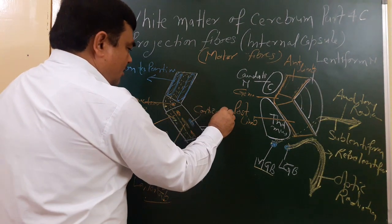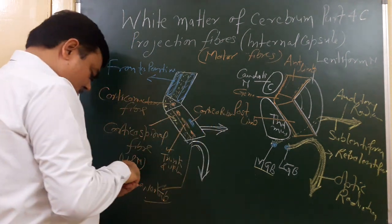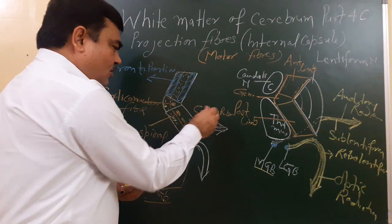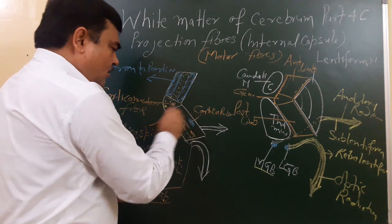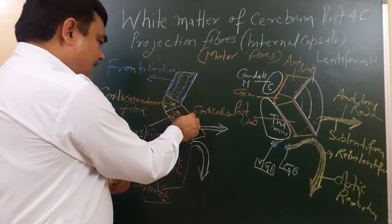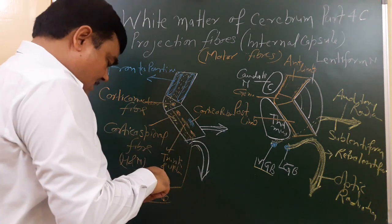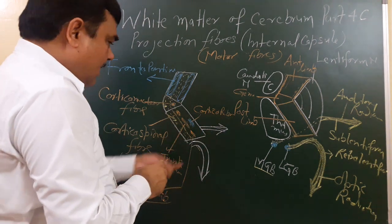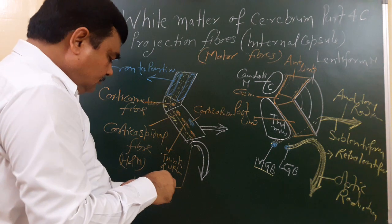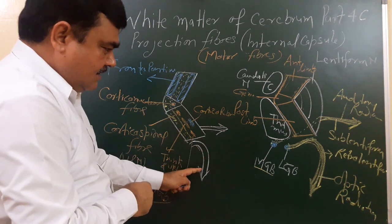The corticorubral fibers and corticoreticular fibers, along with corticonuclear fibers, all lie in the posterior limb.